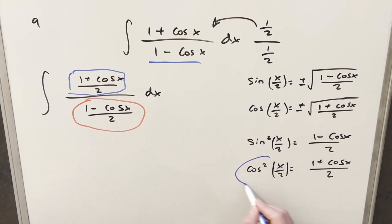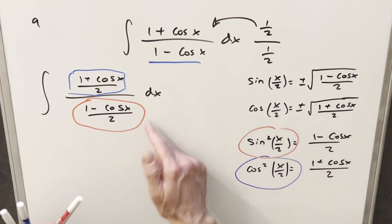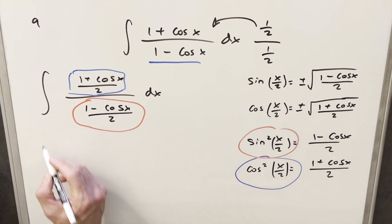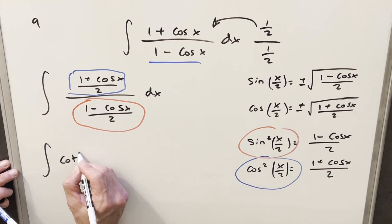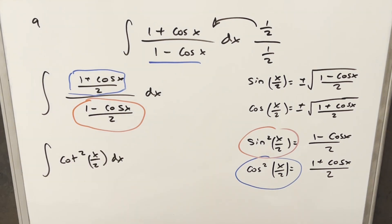So just plugging in cosine squared where we have this and plugging in sine squared x over 2 for what we have in the denominator, that's going to actually give me cotangent squared of x over 2.